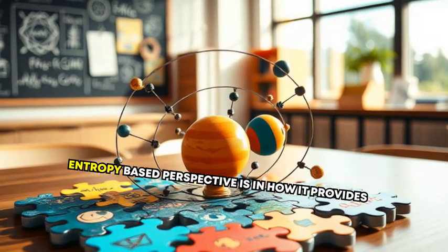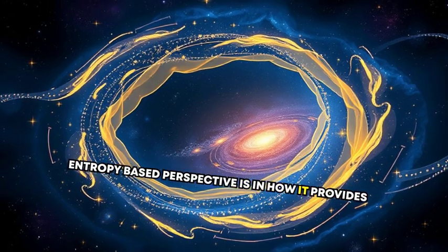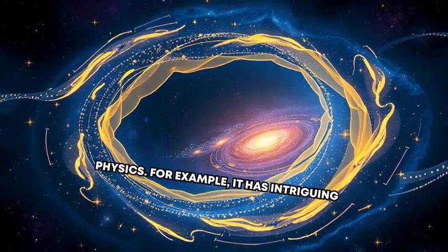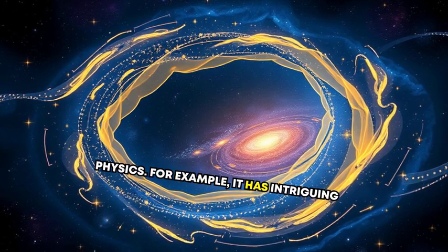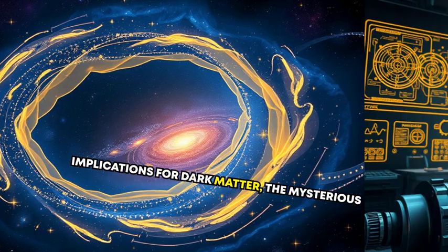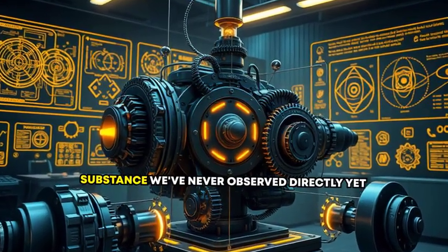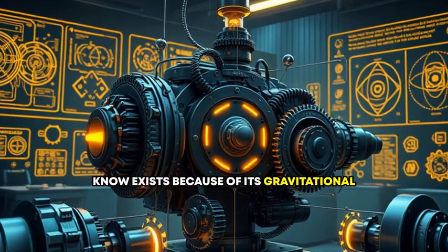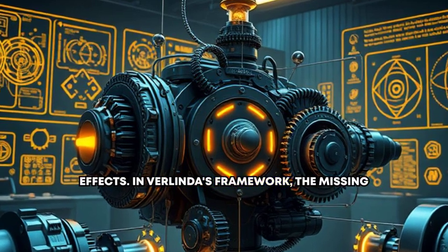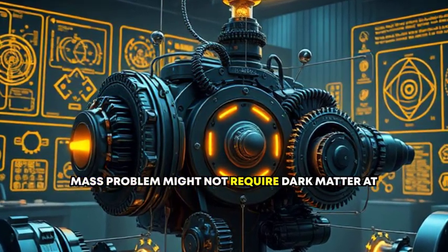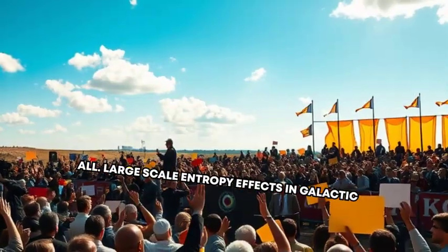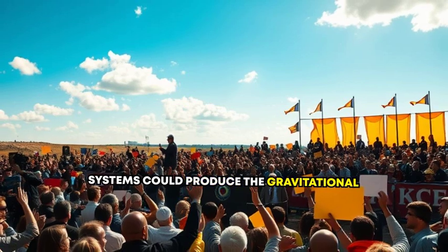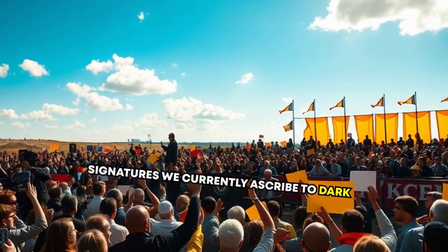The beauty of this entropy-based perspective is in how it provides fresh ways to tackle unresolved puzzles in physics. For example, it has intriguing implications for dark matter, the mysterious substance we've never observed directly, yet know exists because of its gravitational effects. In Verlinde's framework, the missing mass problem might not require dark matter at all. Large-scale entropy effects in galactic systems could produce the gravitational signatures we currently ascribe to dark matter.